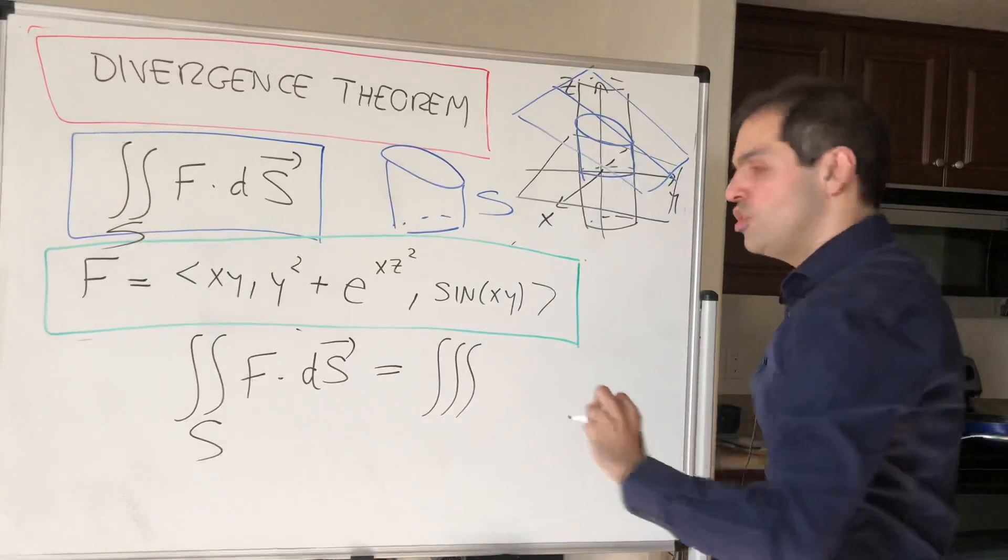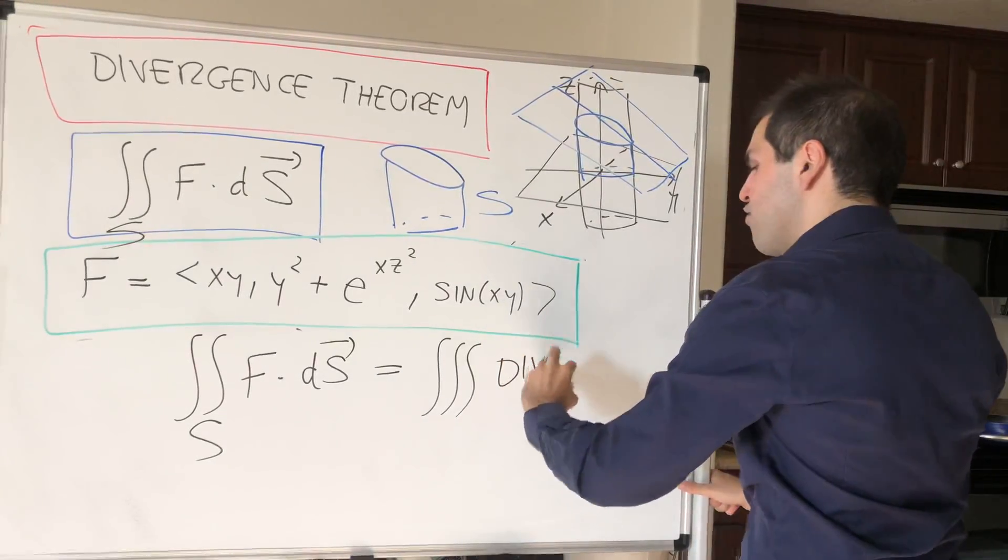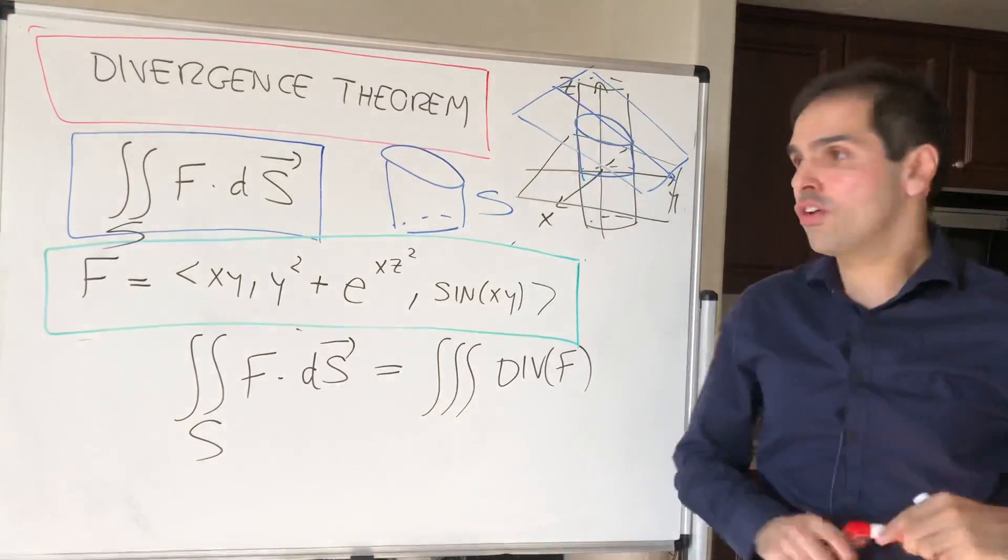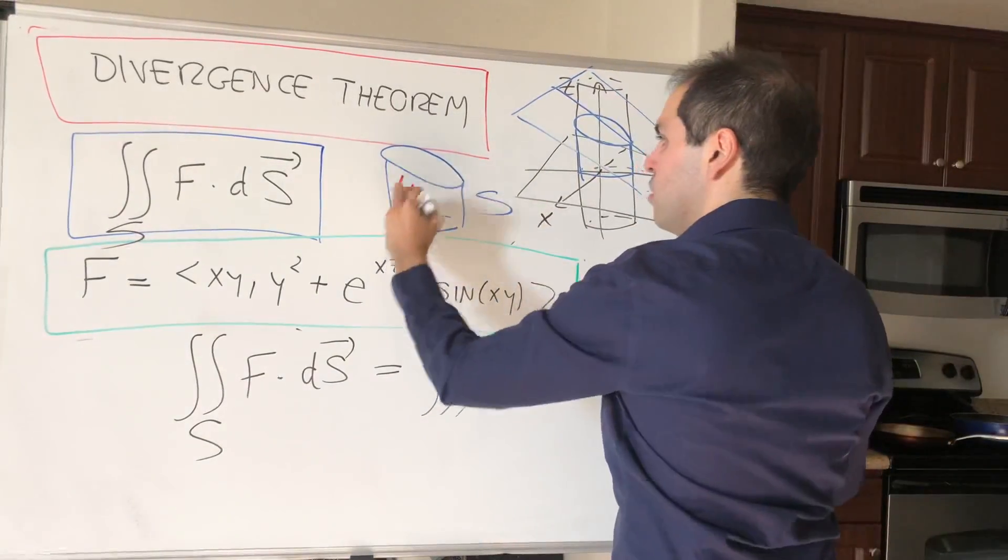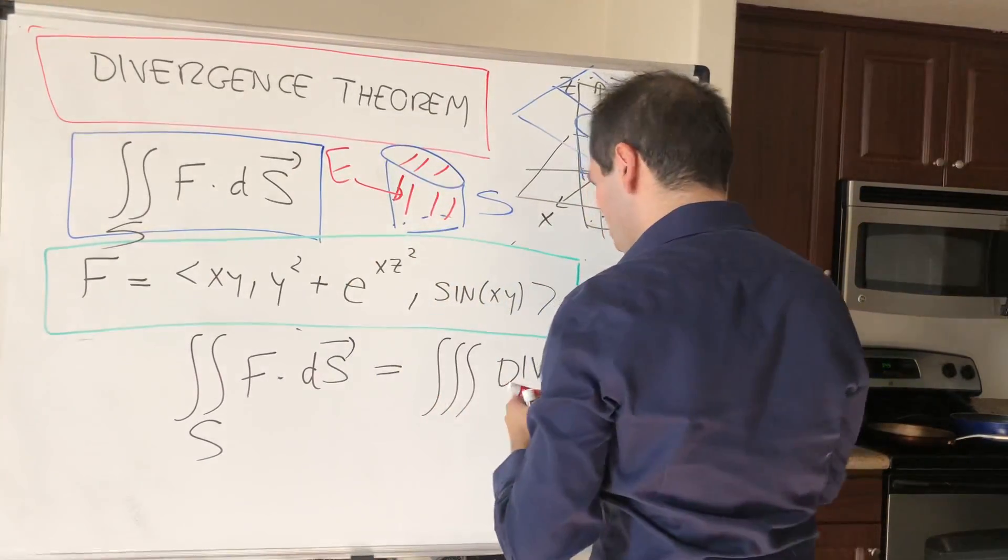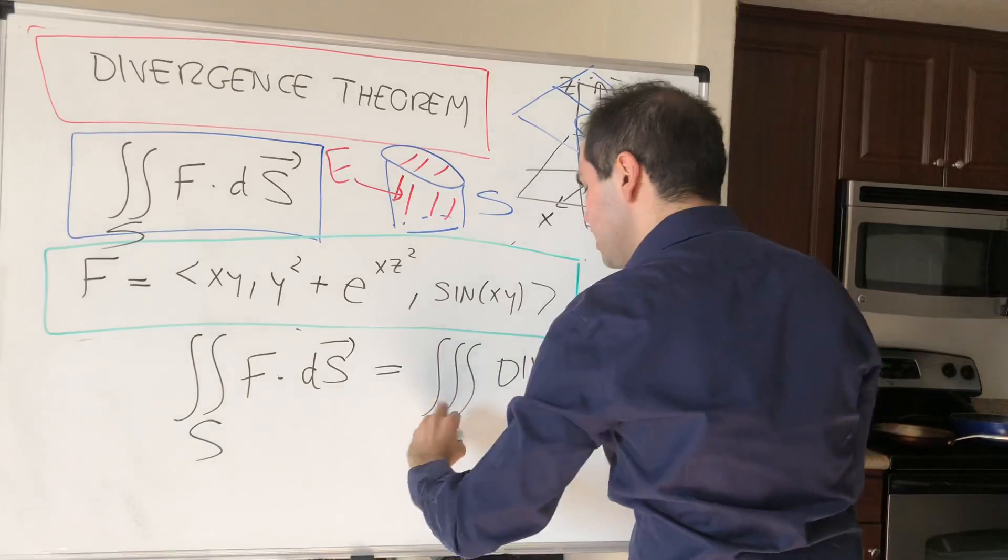It says that the surface integral of this complicated vector field is the triple integral of a much easier function, called the divergence of F, and over which region? Simply over the inside of S, so triple integral over E of an easier vector field.